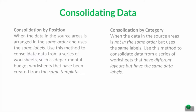First, consolidation by position: when the data in the source areas is arranged in the same order and uses the same labels. Use this method to consolidate data from a series of worksheets such as departmental budget worksheets created from the same template. Consolidation by category is when the data in the source areas is not in the same order but uses the same labels. Use this method to consolidate data from worksheets that have different layouts but have the same data labels.